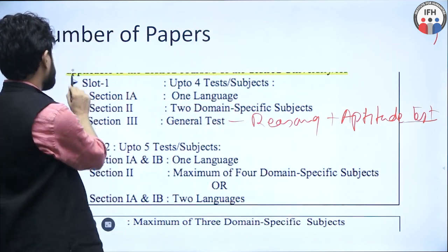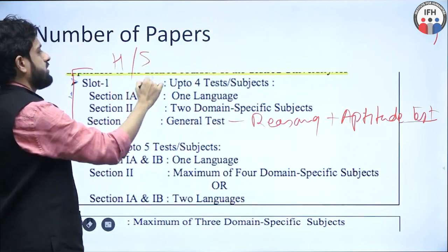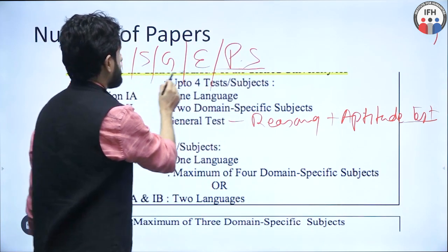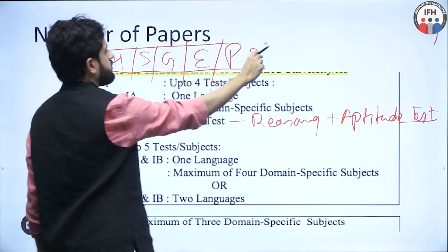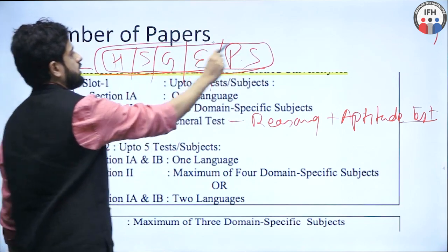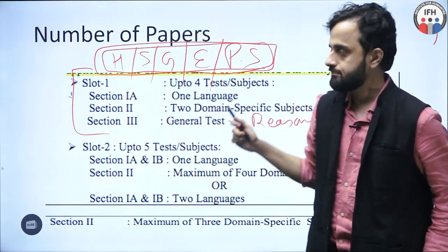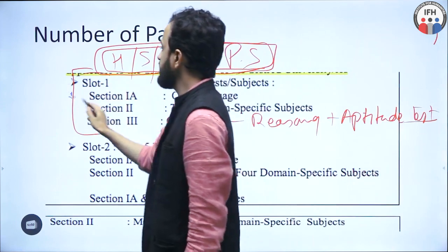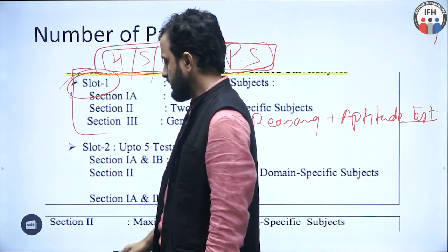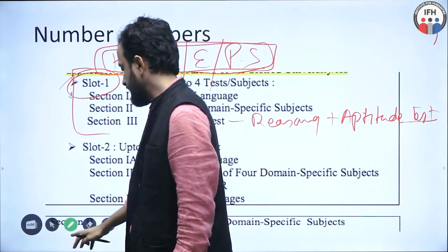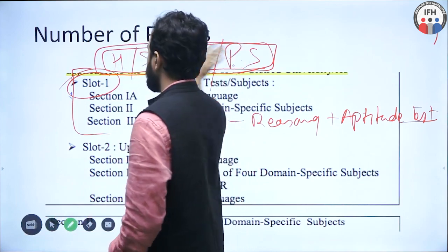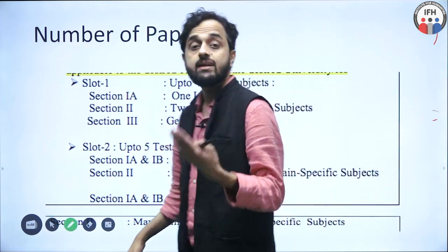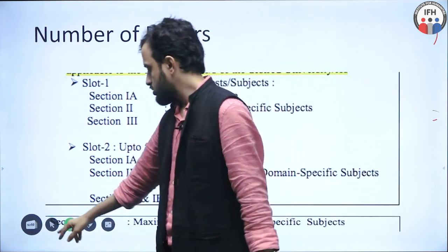I would strongly advise anyone looking at subjects like history, sociology, geography, economics, or political science to go ahead and choose slot 1 — it will be hugely beneficial. Let me now go into further details about the number of questions, time limits, and whether there is negative marking.